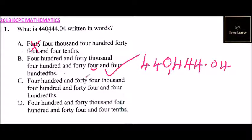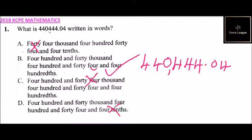Checking answer C — we have four hundred and forty four, but we don't have four hundred and forty four; we have four hundred and forty thousand. Answer D says four hundred and forty thousand, four hundred and forty four, and four tenths — that is not correct. Four tenths would be 0.4, not 0.04, so it should be 400.